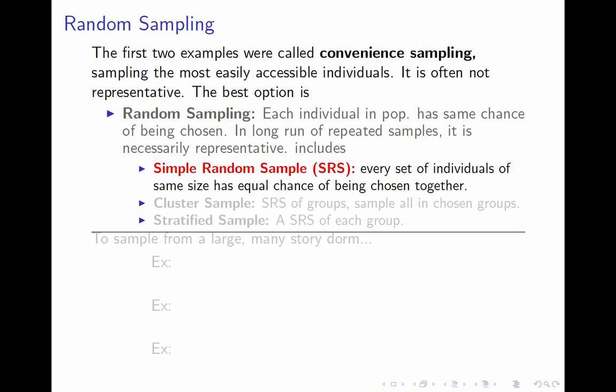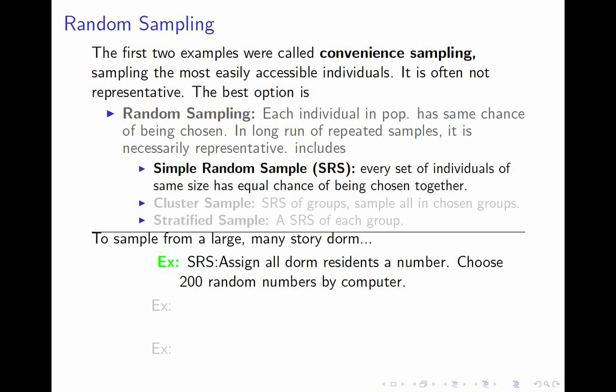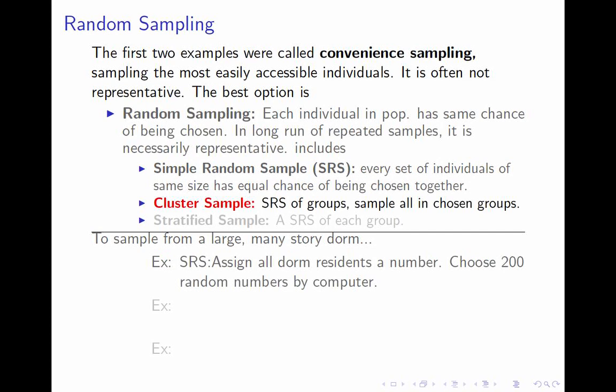I'm going to use one setup for all my examples: imagine some big state university with a very large dorm that has lots of floors. A simple random sample would involve writing down the name of everybody who lives there, numbering them in order, and then using a computer or random number generator to randomly select 200 individuals and go ask them the questions. A simple random sample tends to be labor-intensive. If you have a really big population like all of America, writing down everybody's name and picking 200 at random would be awfully difficult, and then you'd have to hunt down 200 people across the entire country. That's a little bit impractical.